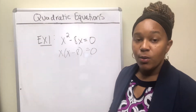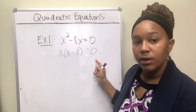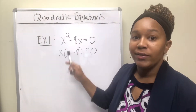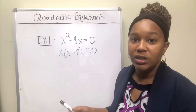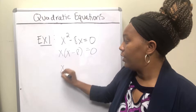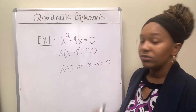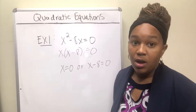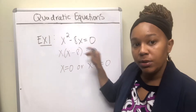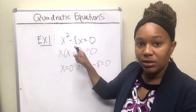So now we have factored and we have that x times (x minus 8) equals zero. This is where the zero product property comes into play. You have two things that multiply to give you zero, which means one of those things has to be zero. So either x is zero or x minus 8 is zero — or they both can be zero. We need to figure out what x needs to be in order to make each factor zero.